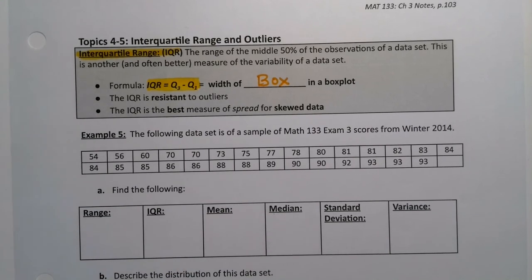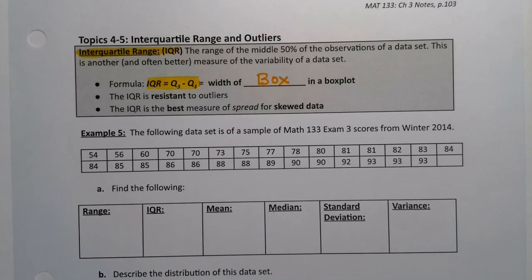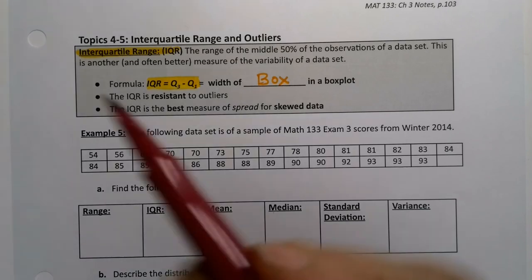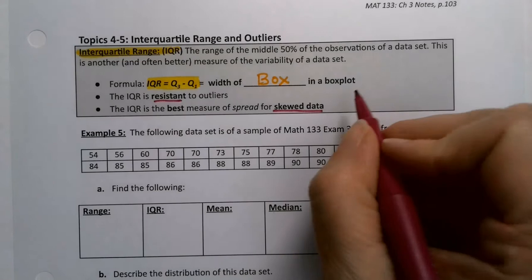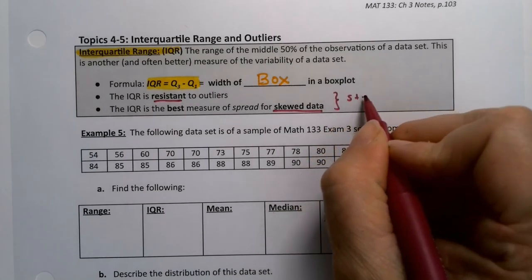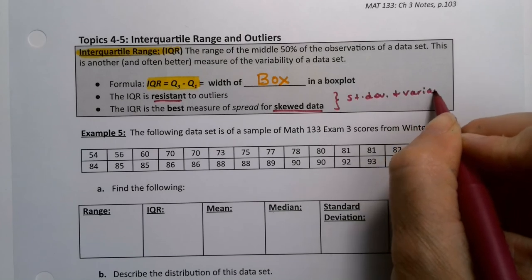Now the beautiful thing about IQR is that it's resistant to outliers, which will be very nice for us. Since it's resistant, that means we can use it for skewed data. Because we already learned that standard deviation is not so good for skewed data. Standard deviation and variance are not good with skewed data, but IQR is.